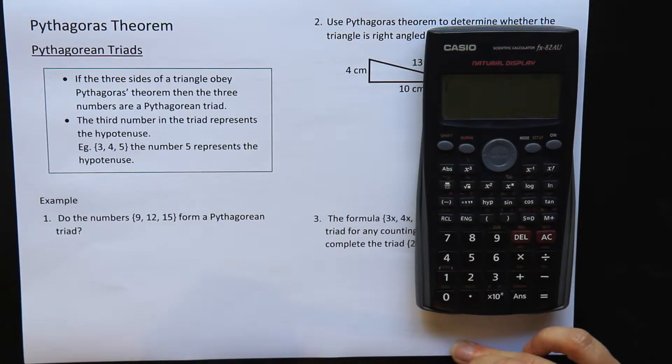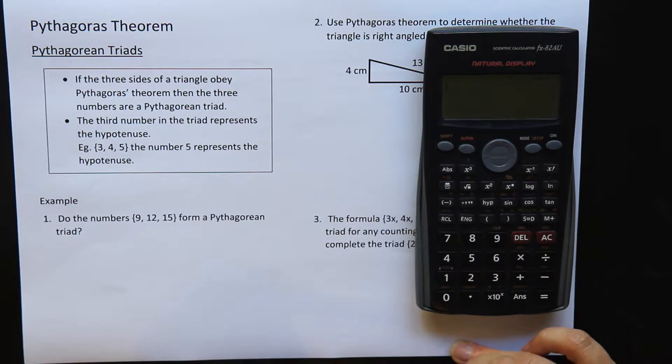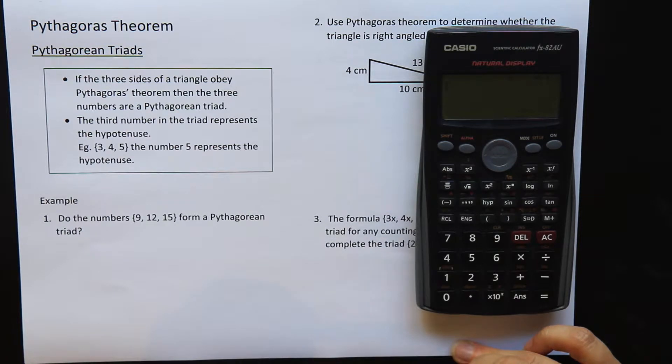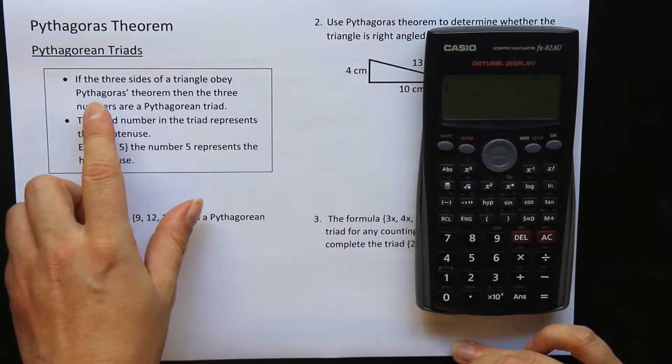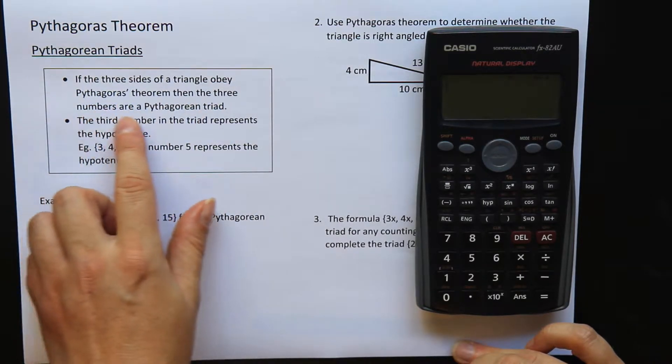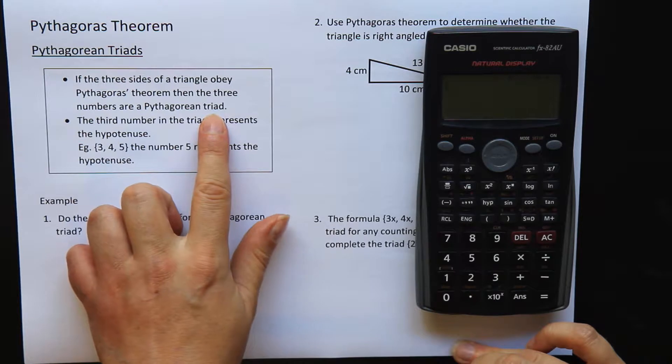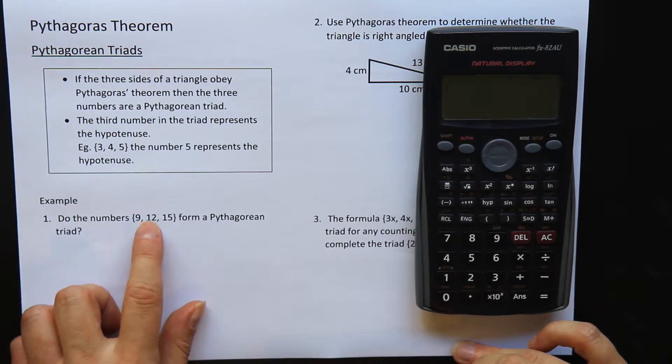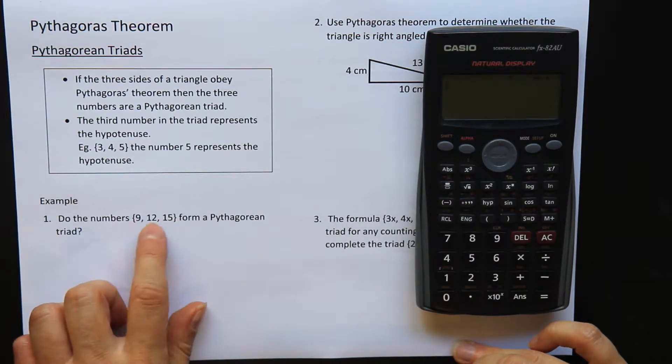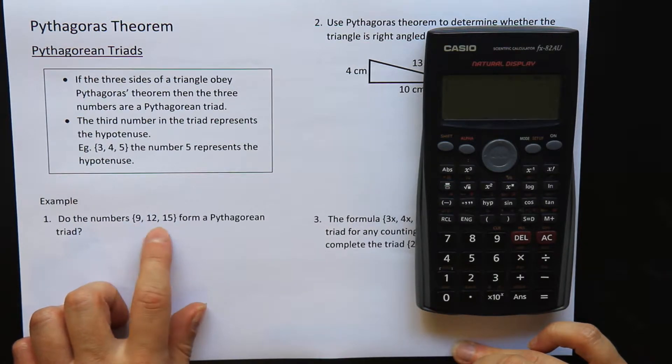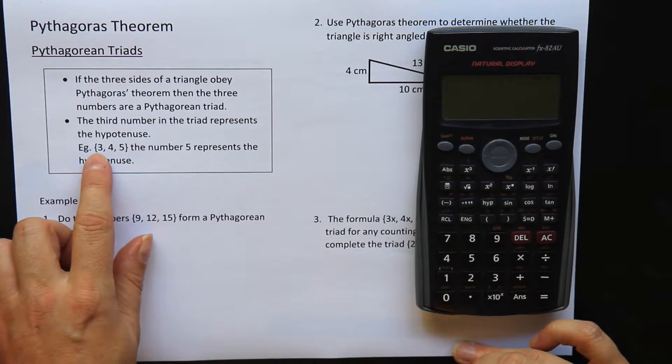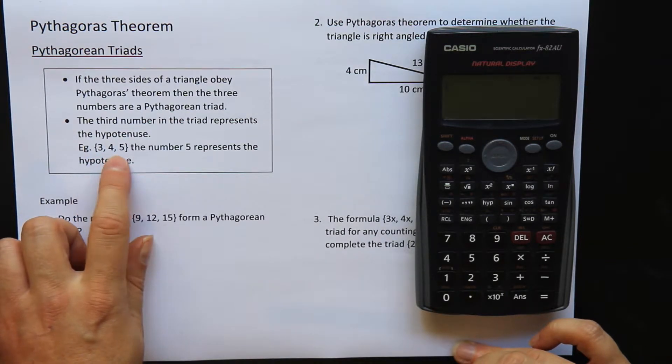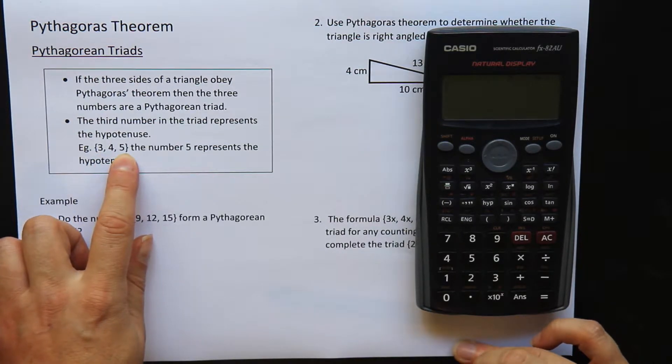So when we say Pythagorean triad, we are just looking for three sides that follow Pythagoras' Theorem's law. If the three sides of a triangle obey Pythagoras' Theorem, then the three numbers are called a Pythagorean triad. Sometimes you'll see Pythagorean triads written like this in some curly brackets with your three numbers representing your three sides inside the brackets. The numbers will be in ascending order, so the first two numbers will be your shorter sides and the third number, the last number, will always be your hypotenuse.